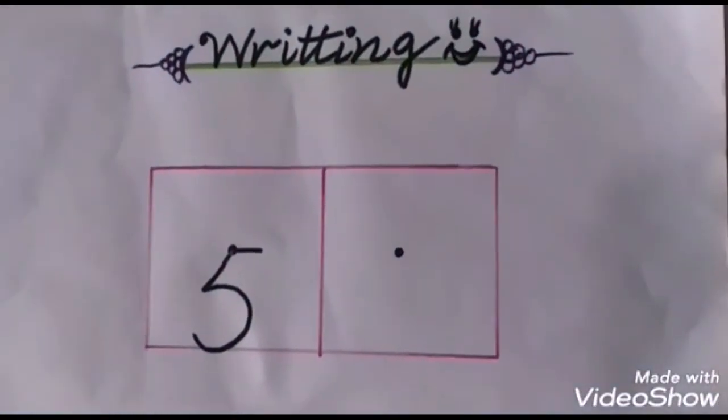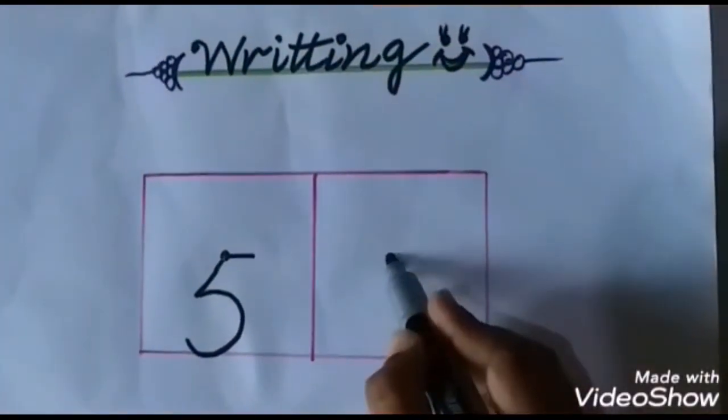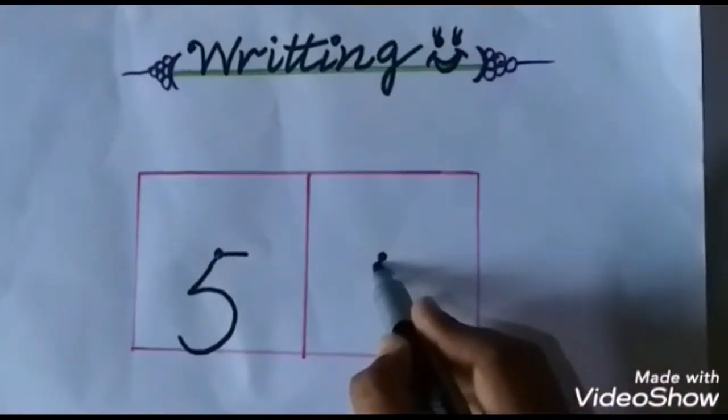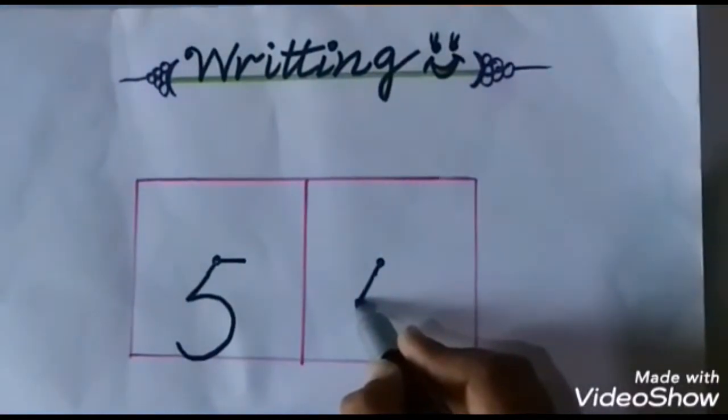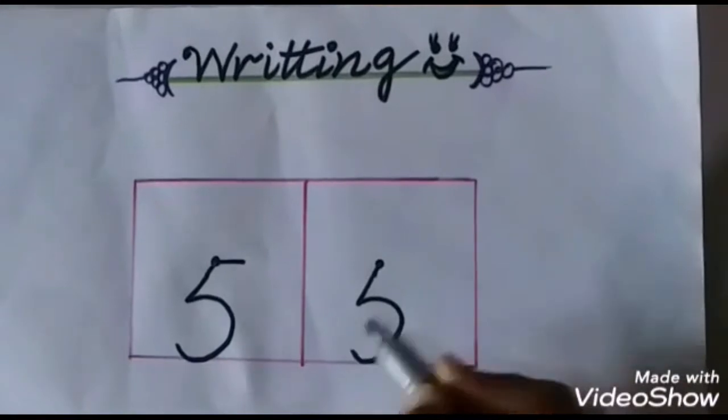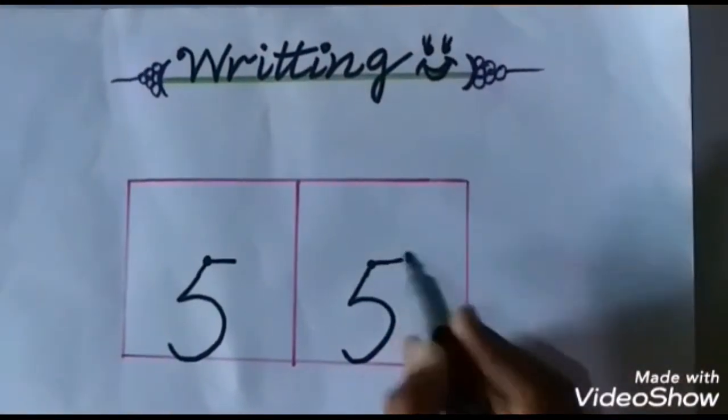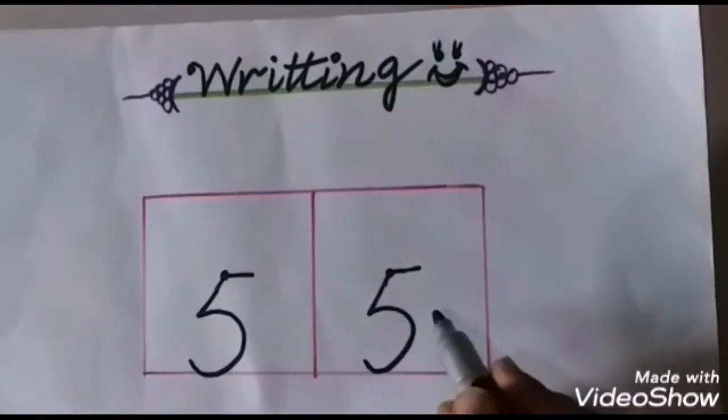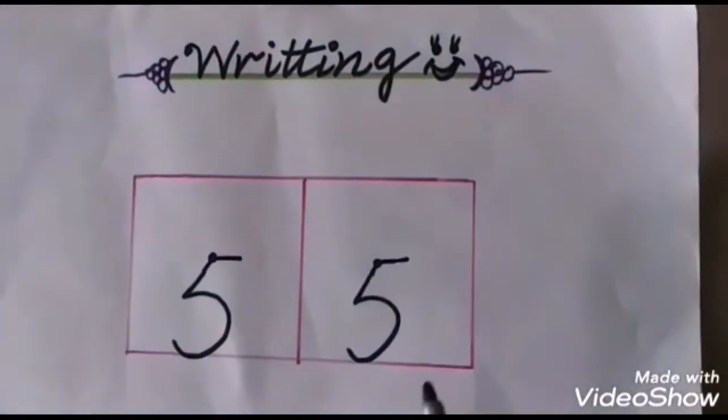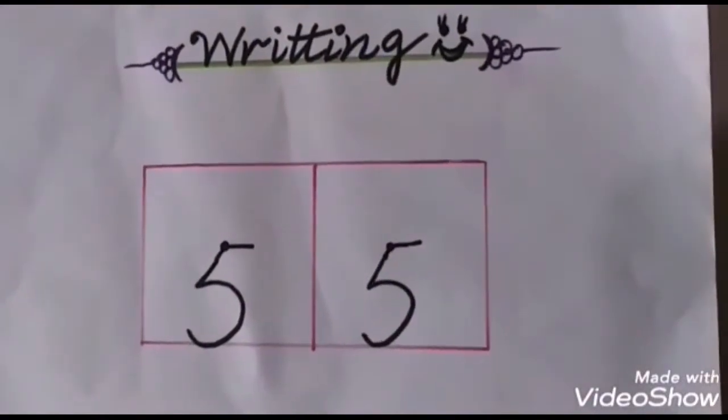Now again teacher will guide you how we write digit 5. We start here. Make a small slant line. And then make a small belly. And make a slip line. This is 5. Okay students, you will write on your notebooks as teacher has guided you. Very good.